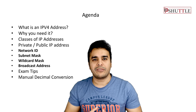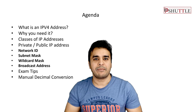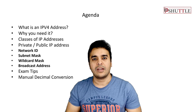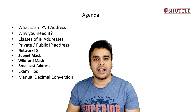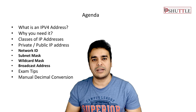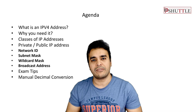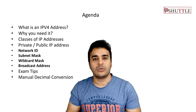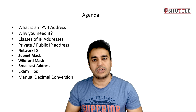Today we will be covering one of the most discussed topics in the groups. It's about IPv4 — what is an IPv4 address and why you need it, what are the classes of it, what are the different portions of that IP address, and how you can calculate subnet mask, network ID, broadcast address, and wildcard mask. I will also be adding a few exam tips on how you can convert numerical notation into decimal and vice versa.